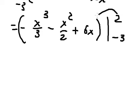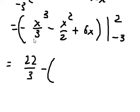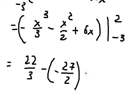Plugging in 2, we get 22 over 3. Minus plugging in negative 3, we get negative 27 over 2. We calculate this and we have 125 over 6.